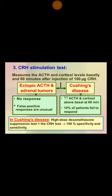However, 10% of patients may fail to respond. But if you combine the high-dose dexamethasone suppression test and the CRH test, the specificity and sensitivity to diagnose Cushing's disease is about 100%. If you have any comments, please write them below. Thank you.